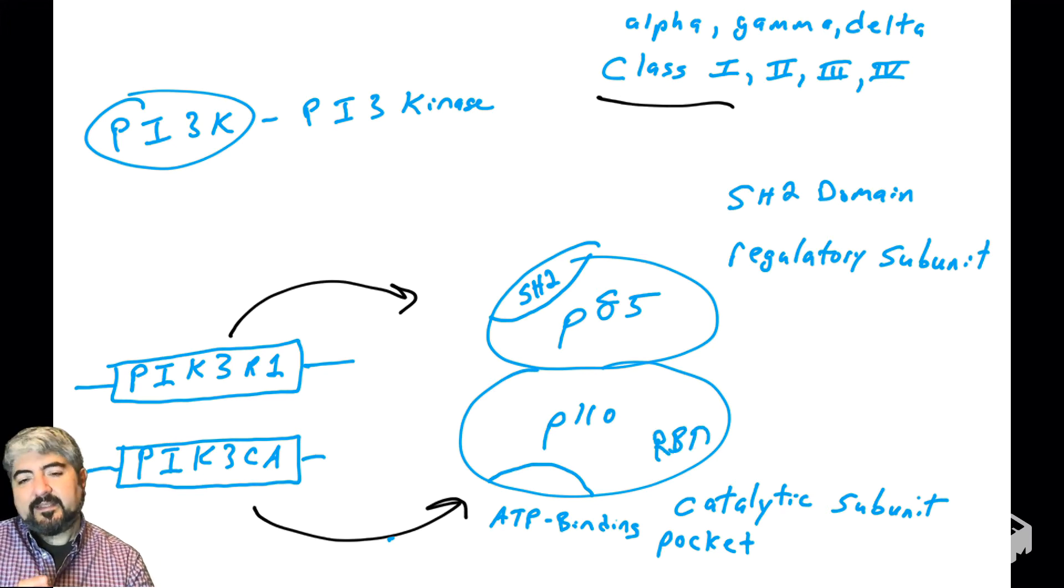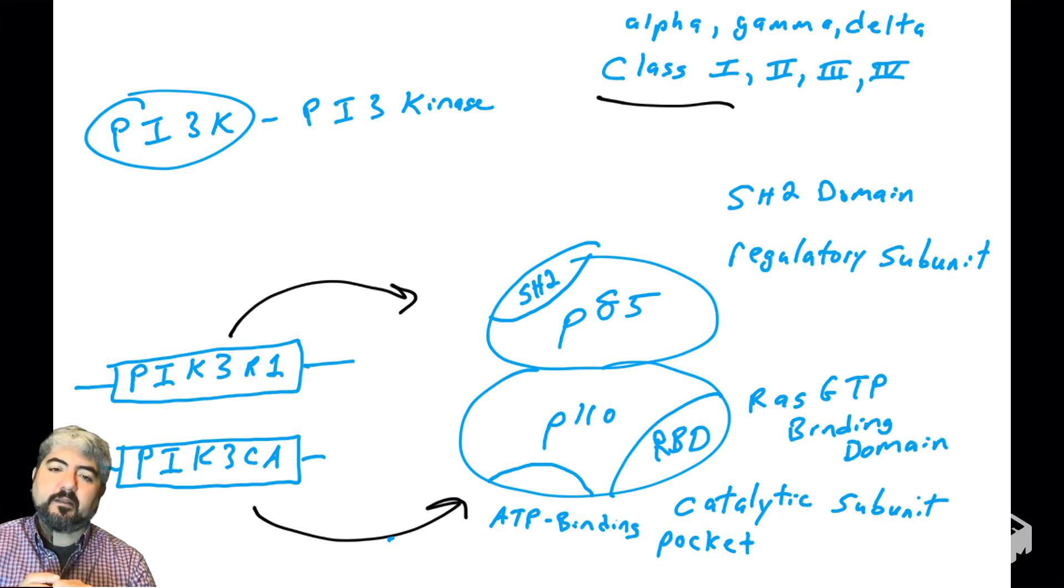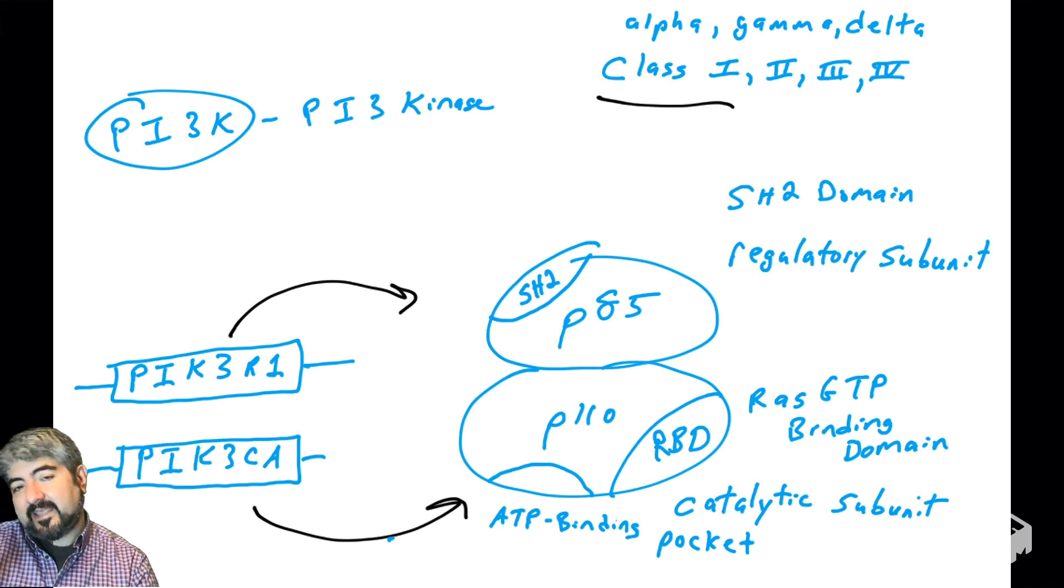An SH2 domain can bind phosphorylated tyrosines—not every phosphorylated tyrosine, but phosphorylated tyrosines within its binding motif. P85 binds certain phosphorylated tyrosines on proteins, and that will allow this protein, PI3 kinase, to be recruited to the plasma membrane. One more domain to talk about is in the P110 subunit: RBD for RAS GTP binding domain. RAS is a very important signaling molecule. When RAS is bound to GTP, P110 can bind to it. This is similar to another protein you learned about—the kinase RAF. Now we have another protein similar to RAF that will bind RAS GTP.